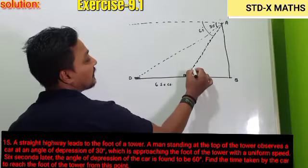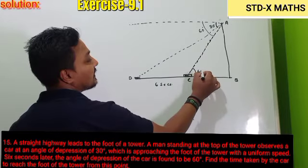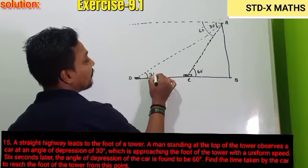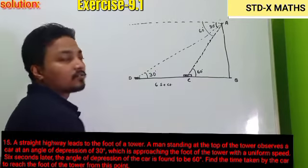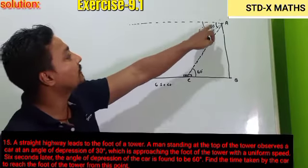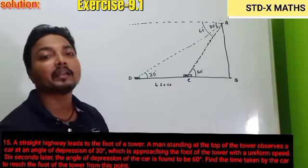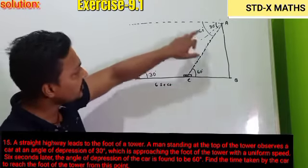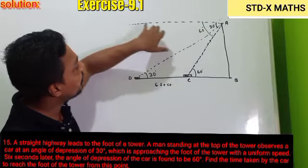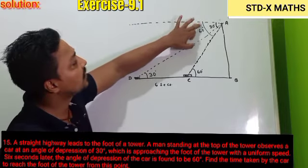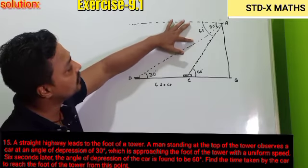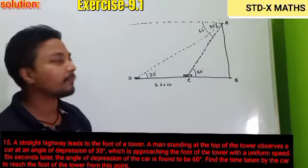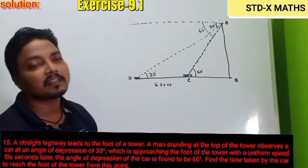When this angle is 60 degrees, this angle is also 60 degrees, and when this angle is 30 degrees, this angle is also 30 degrees, because both angles are interior alternate angles. Here I have drawn the normal, and this is the angle of depression of the first position of the car and this is the angle of depression of the second position.